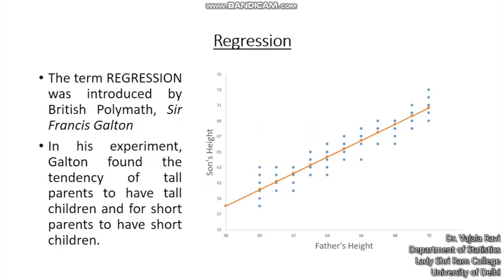The term regression was given by the British anthropologist Sir Francis Galton when he was conducting research on the height of parents and their progeny. In the experiment, he noticed the tendency of heights of wards to settle at average values. Hence, he termed regression as stepping back towards the average.